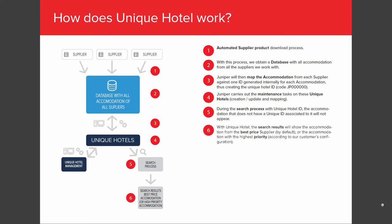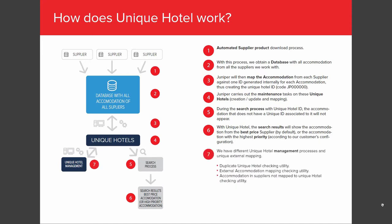Point six: by default, we are going to offer the best price or the cheapest hotel. Another possibility, which we will see in the demo, is through the configuration — you can choose what supplier you want to appear in the product list. Point seven: we have different processes to get the unique hotels: duplicate unique hotel checking utility, external accommodation mapping checking utility, and accommodation in suppliers not mapped to unique hotel checking utility. And this is how it works.